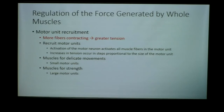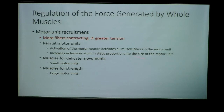Recruitment is the ability to call on additional motor units and all the fibers each motor unit is innervating, and that translates to more force because we have more fibers and more crossbridge cycling. Make sure you make that connection — there's more force because there's more active crossbridge cycling. Small motor units are typically involved in delicate movements, such as eye movements; the extraocular muscles are smaller motor units with more fine-touch ability. Larger motor units, like those in the glutes, hamstrings, or gastrocnemius, are for bigger muscles with bigger fibers.